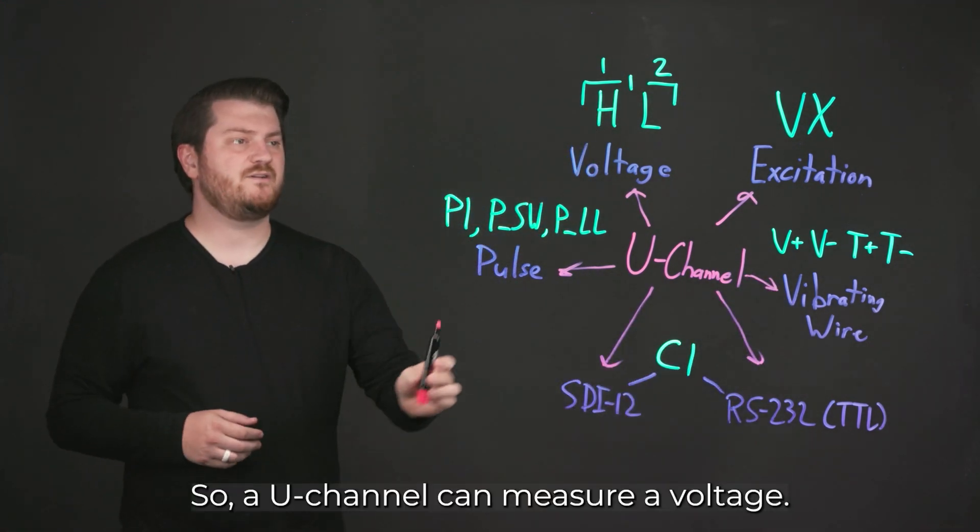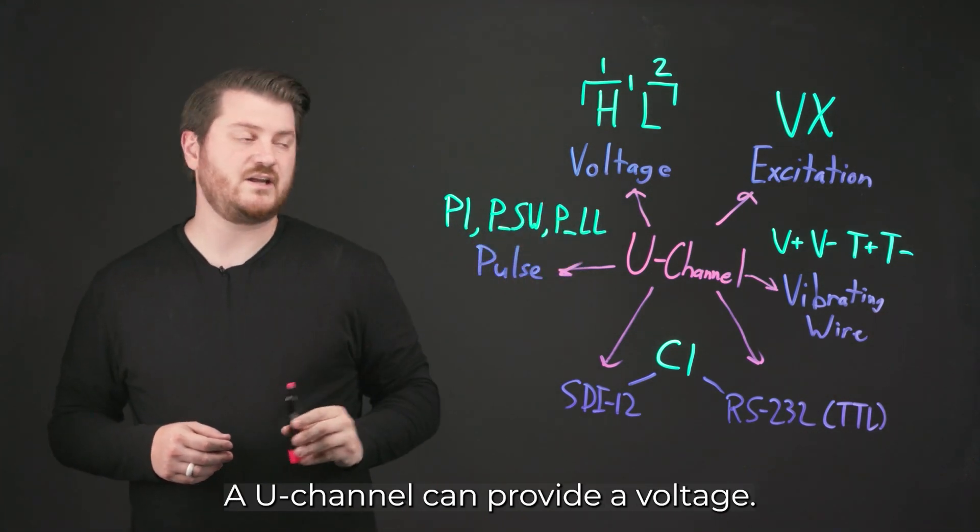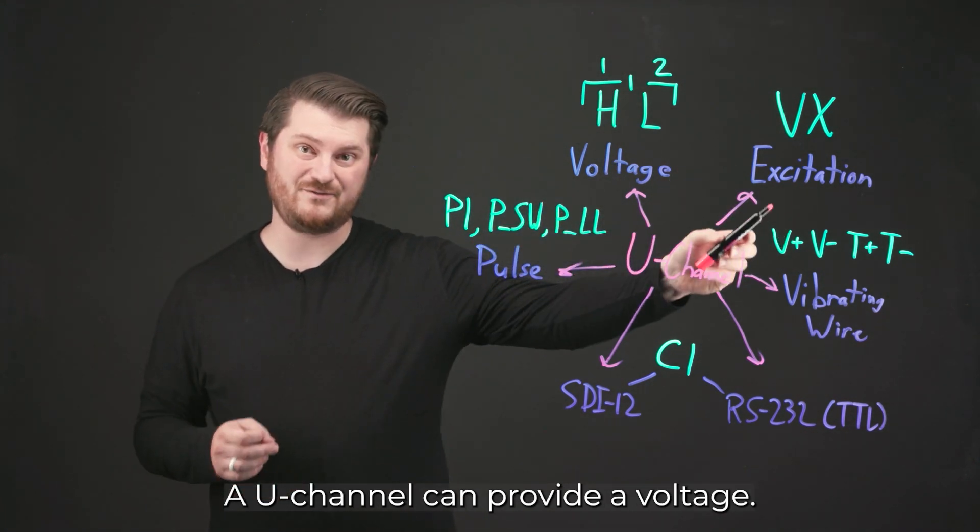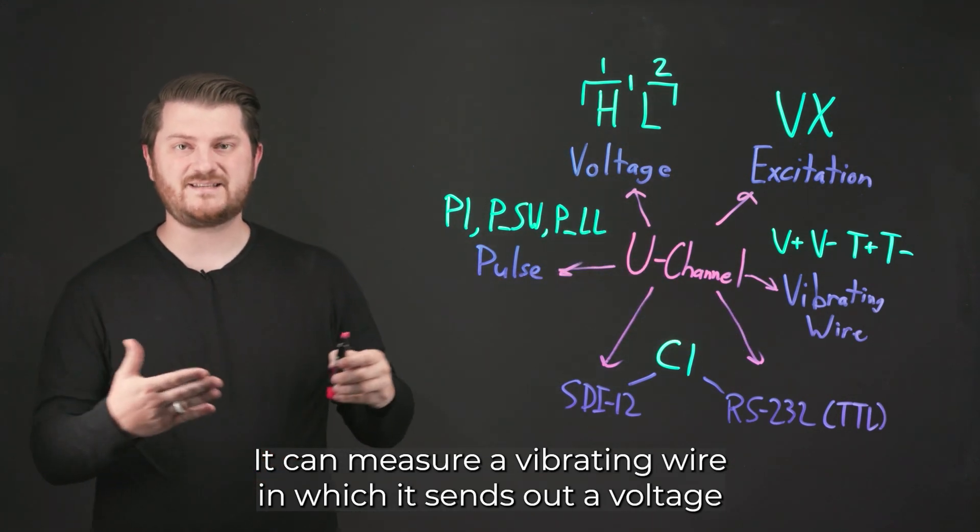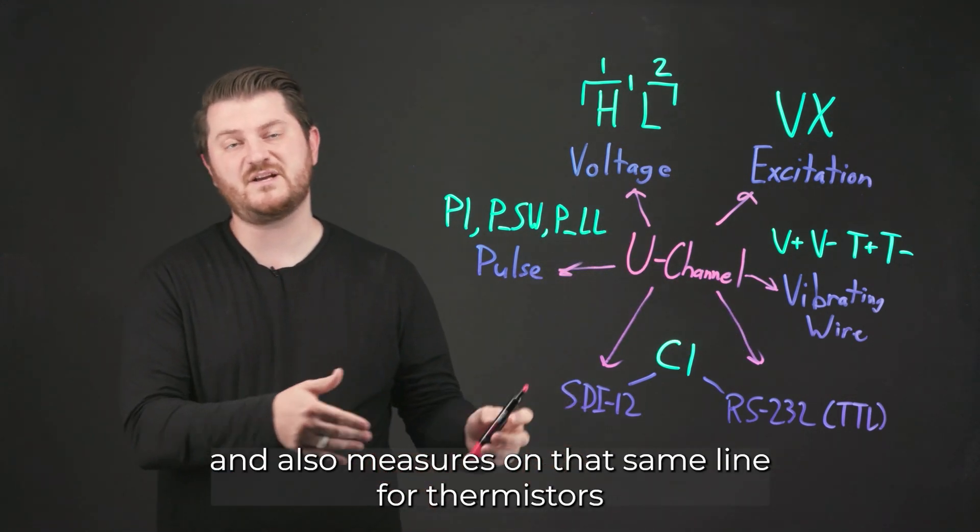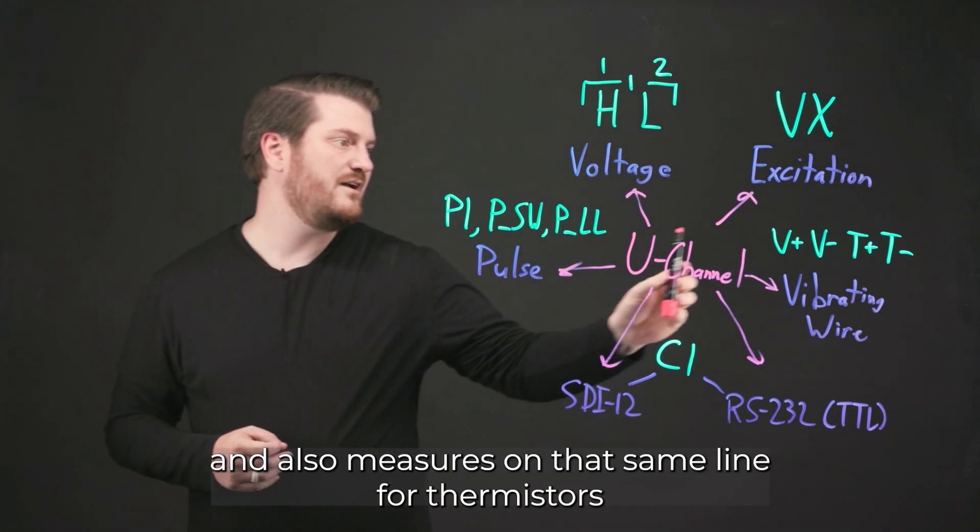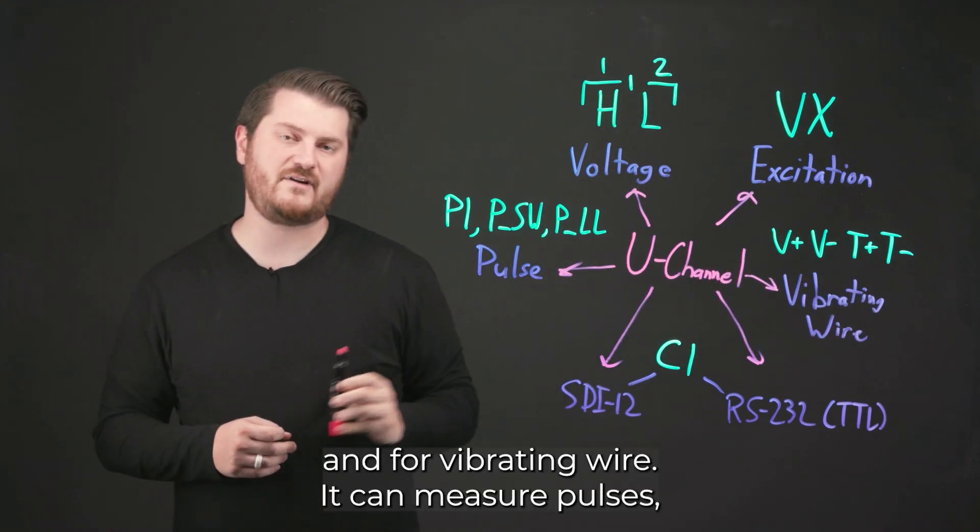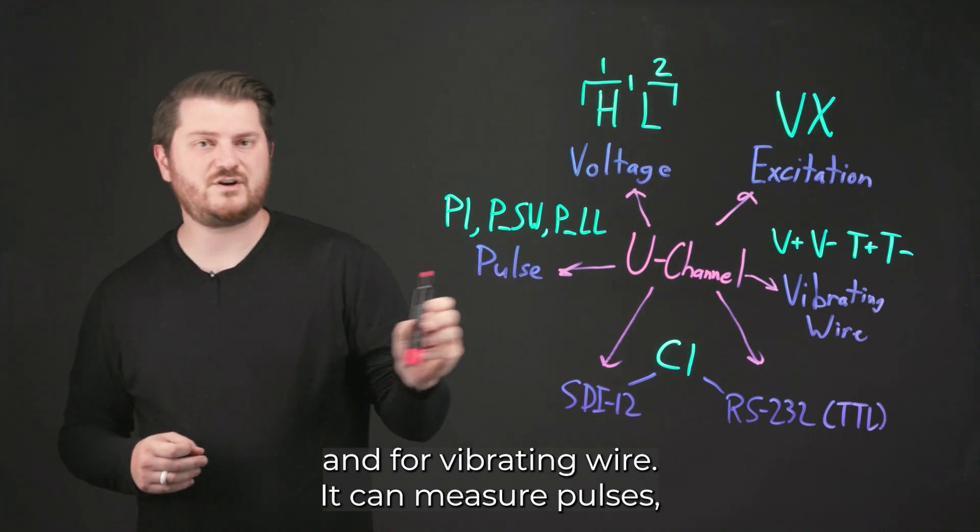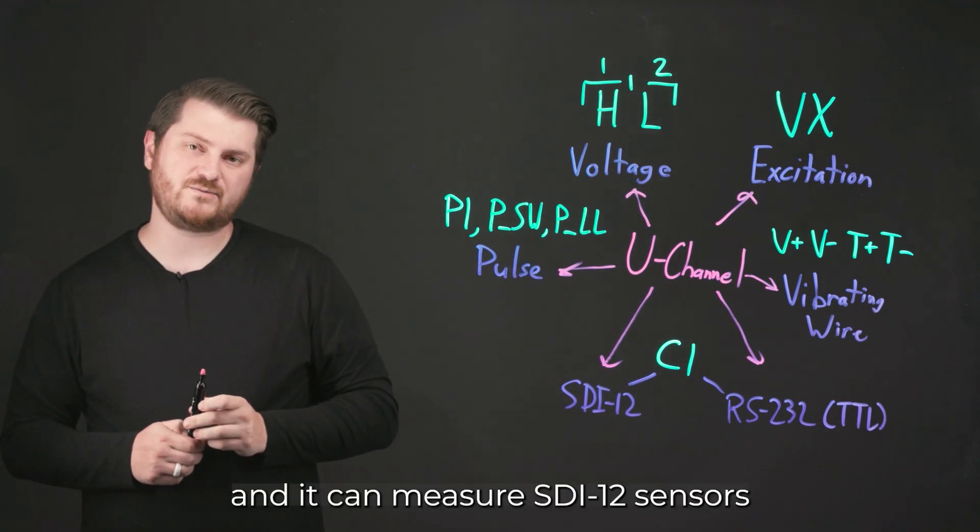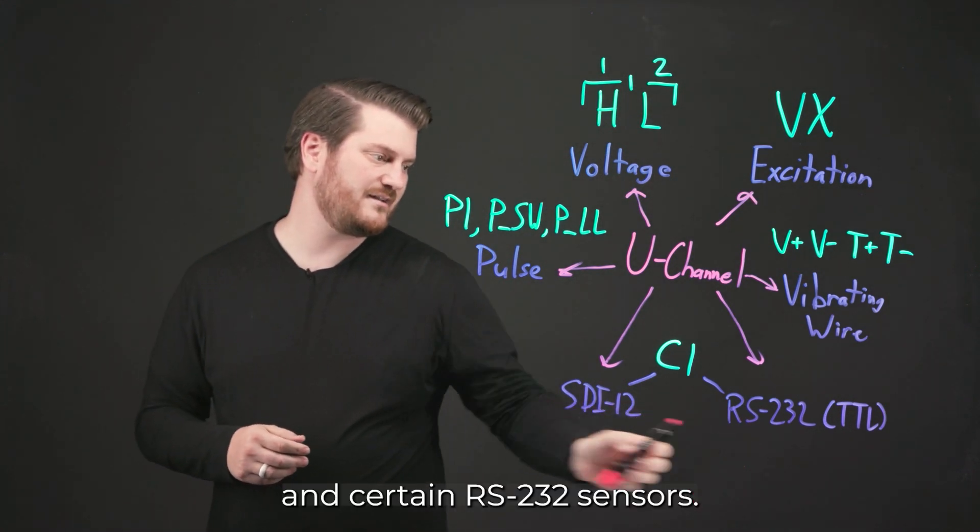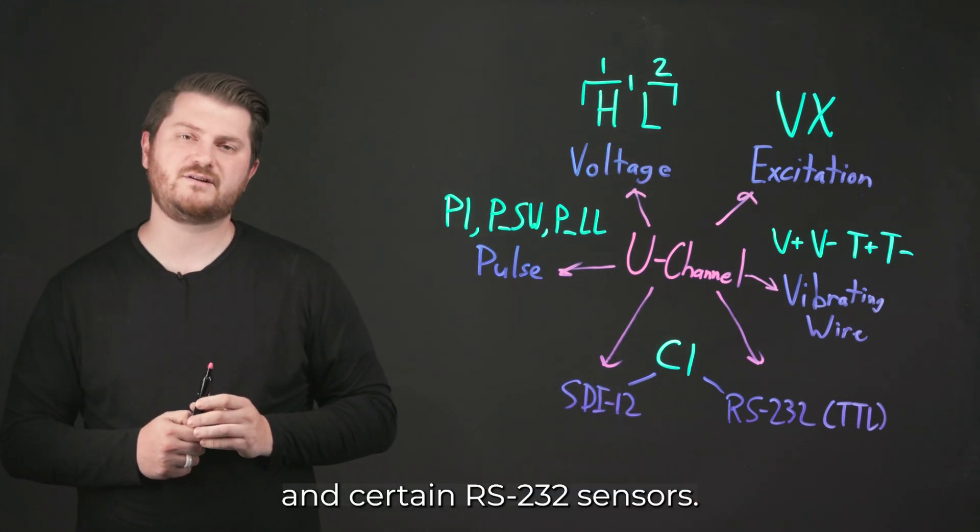So a U-channel can measure a voltage. A U-channel can provide a voltage. It can measure vibrating wire, in which it sends out a voltage and also measures on that same line for thermistors and for vibrating wire. It can measure pulses, and it can measure SDI-12 sensors and certain RS-232 sensors.